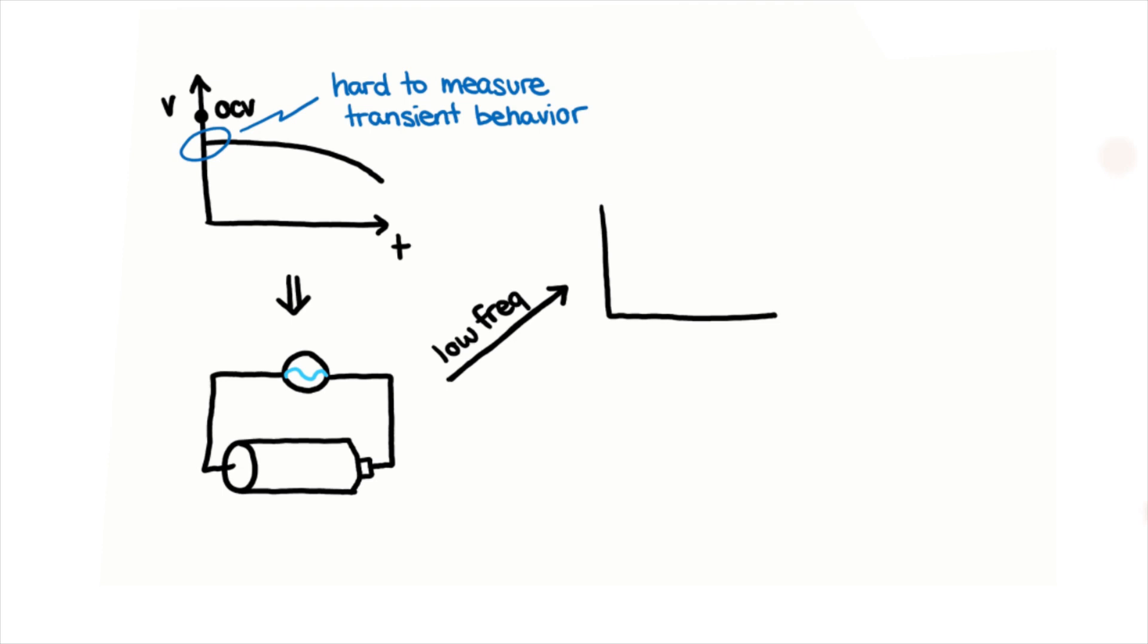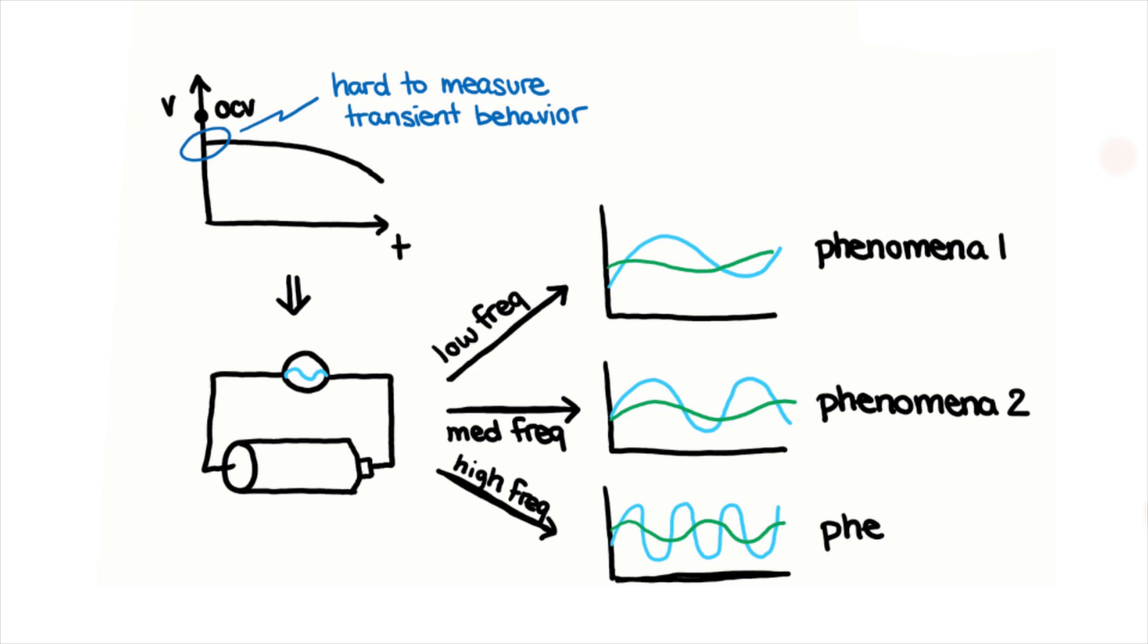However, applying an AC current or potential of different frequencies allows separation of events based on their timescales.